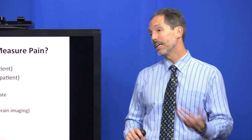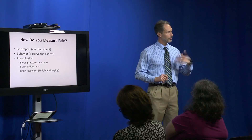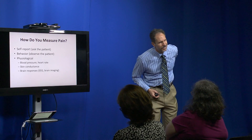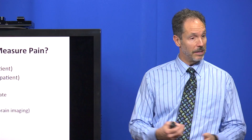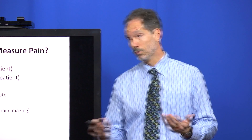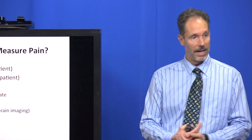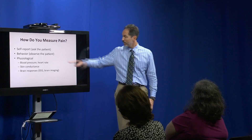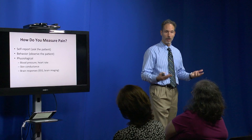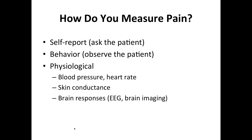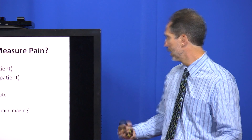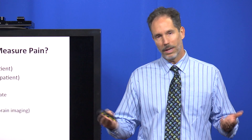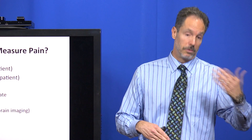Self-report remains the gold standard for measuring pain. There are other things we can measure that may help us understand more. There are behavioral measures—if you see somebody reaching for their back or grimacing, that may be a sign they're in pain. There are also physiological responses: if someone is in a lot of pain, their blood pressure might go up, they might sweat more, their respiration rate might go up—but those changes aren't specific to pain.